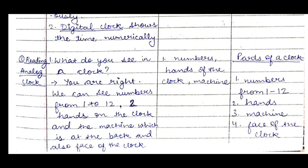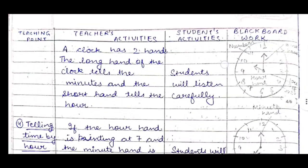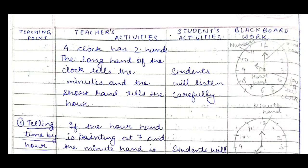We can use a toy clock, sample clock, or real clock to demonstrate and show students the face of the clock, the hands, and everything. A clock has two hands — the long hand tells the minutes, and the short hand tells the hour. We can draw a clock on the board or use a real clock to explain: the long hand is the minute hand, the short hand is the hour hand.